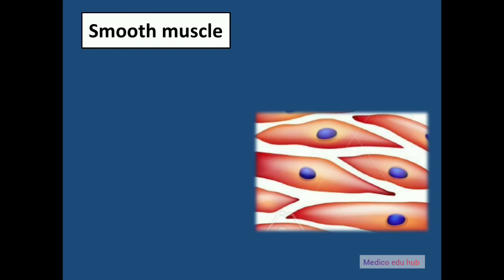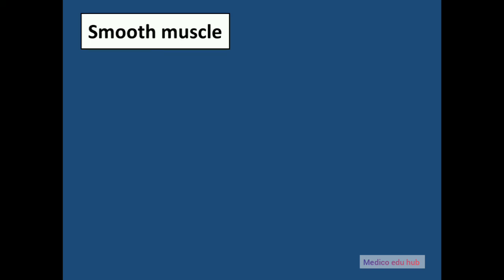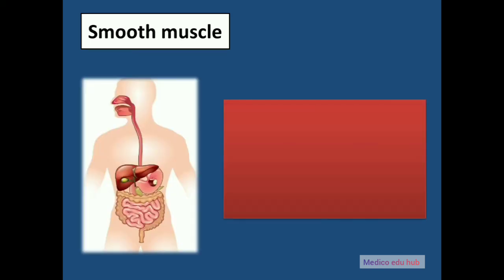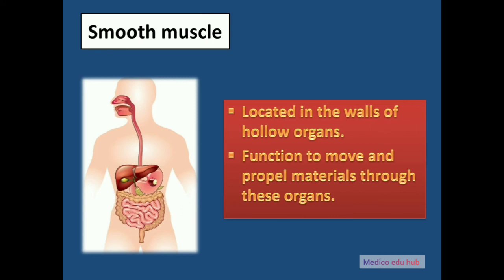Next is smooth muscle. Smooth muscle tissue does not have striations like other muscle tissue, and its cells are short and tapered at the ends. They are under involuntary control and are located in the walls of many hollow organs such as the stomach, intestines, and blood vessels. Their function is to move and propel material through these organs.